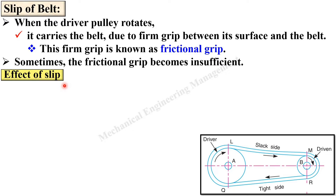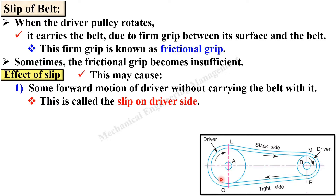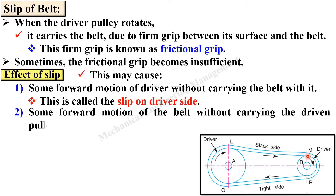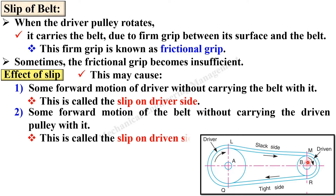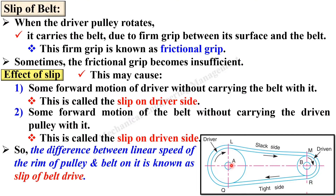Now let us see what will be the effect of slip. This insufficient grip may cause some forward motion of the driver without carrying the belt with it. Due to the insufficient grip, the driver will rotate in the forward direction without carrying the belt — this is called slip on the driver side. Similarly, some forward motion of the belt is called the slip on the belt. Simply, the difference between the linear speed of the rim of the pulley and the belt on it is known as slip of belt drive.